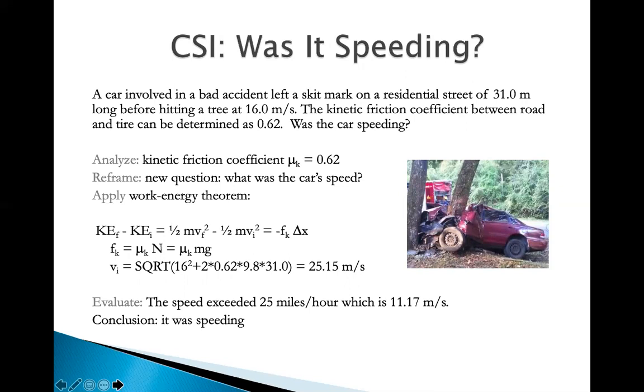Reframing here means we ask a new question. What was the car's speed? Apply the work energy theorem. If we apply that, the final kinetic energy minus the initial kinetic energy equals to the work done by friction. Friction always does negative work. It's what we call a dissipative force. That means it takes energy out of the system. So friction equals to the kinetic friction coefficient multiplied by the normal force, which in this case is weight.